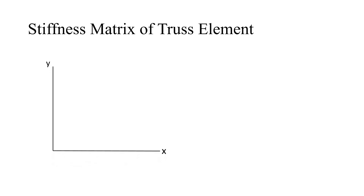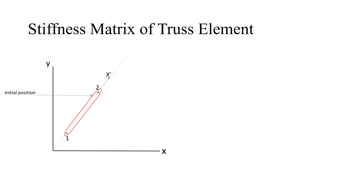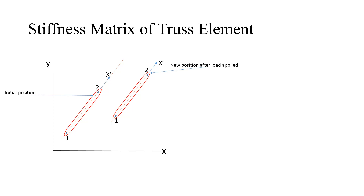Let's move on to the derivation of the stiffness matrix of the truss element. Consider again the global coordinates with the truss element and its nodes. This is the initial position. X dash is the local coordinate system and X and Y are the global coordinate system. When you apply a force, the truss element will move from its initial position to a new position after the application of load.